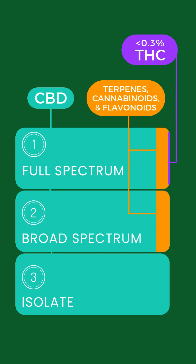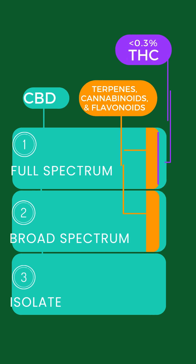There's also full spectrum CBD, which contains CBD terpenes, cannabinoids, flavonoids, and a little bit of THC — 0.3% or less.